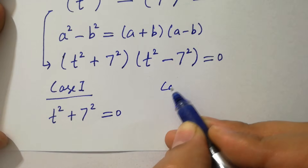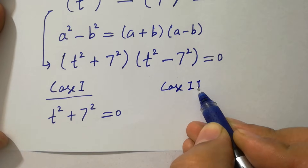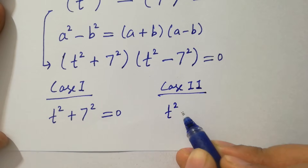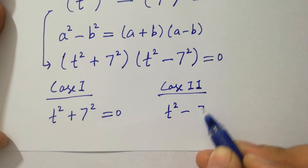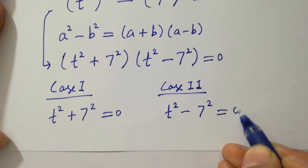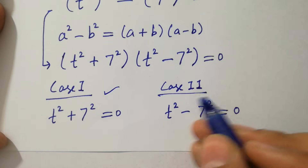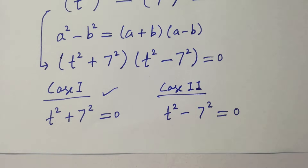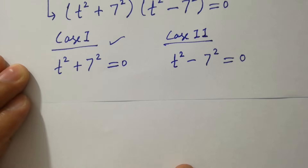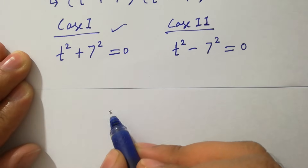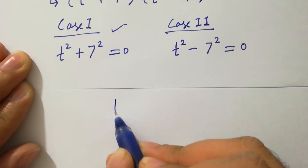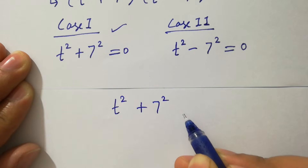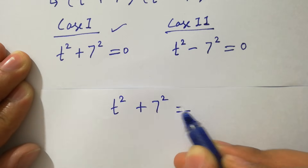This gives us two cases: Case 1 is t² + 7² equals 0, and Case 2 is t² − 7² equals 0.